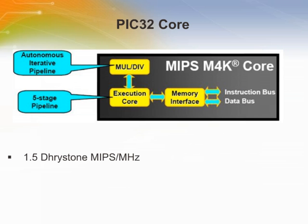Here is the inside of the M4K core. The M4K core uses a five-stage execution pipeline. This means that each instruction is executed in five different stages. Once the pipeline is full, the M4K core executes one instruction per CPU clock.